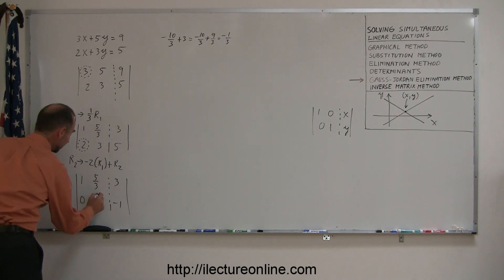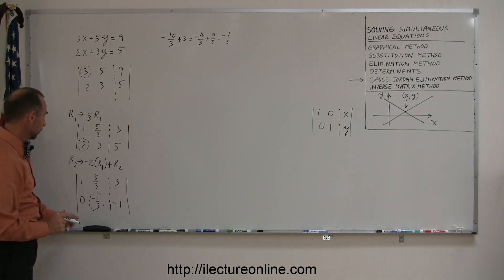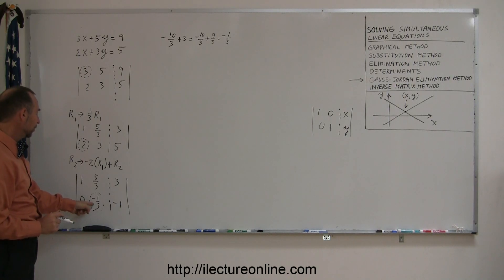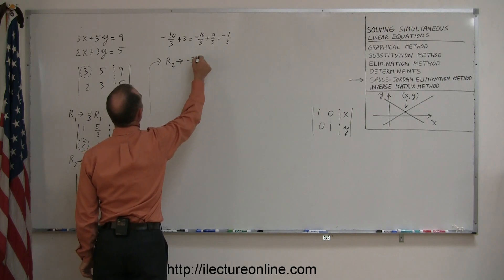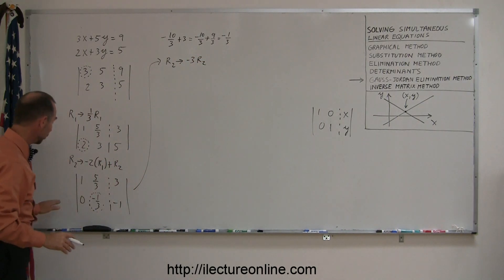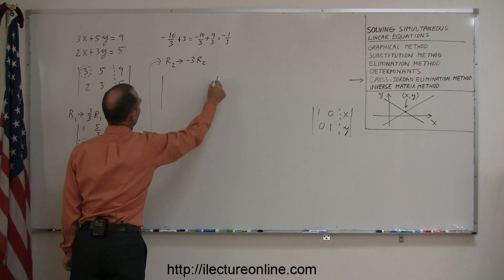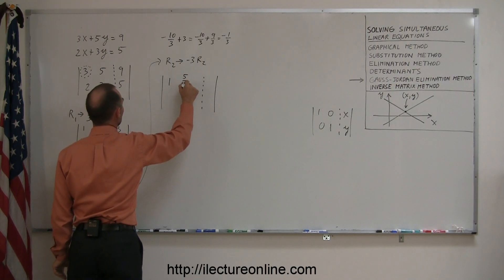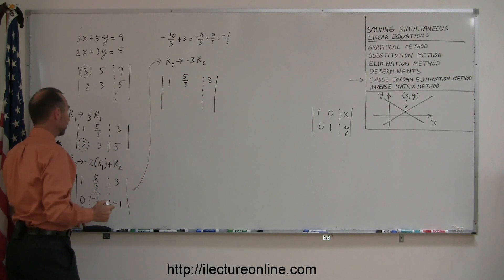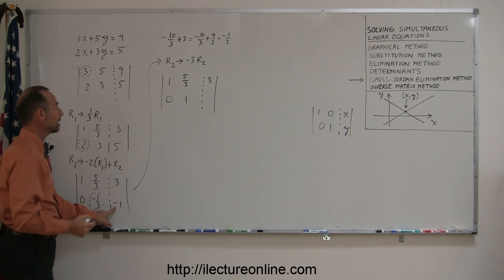Next I work on the second column — I need to change this number to a 1. To do that I need to take this number and multiply it by negative 3. If I multiply negative 1 over 3 by negative 3, I get 1. So I'm going to take the second row and replace it by negative 3 times the second row, multiplying every number in the second row by negative 3. The first row remains as 1, 5 over 3, and 3. The 0 doesn't change. If I multiply negative 1 over 3 by negative 3, I get 1. If I multiply negative 1 by negative 3, I get 3.